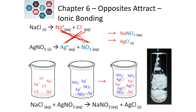Sodium nitrate, if we look at our solubility rules, is always soluble, so it stays as ions in solution — that's why we see sodium and nitrate still as ions. When we take the silver and chloride and check our solubility, it is insoluble, so it will form a solid — silver chloride. In the picture, that is the white solid you see forming in this reaction.